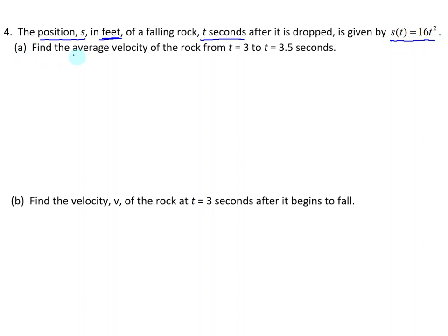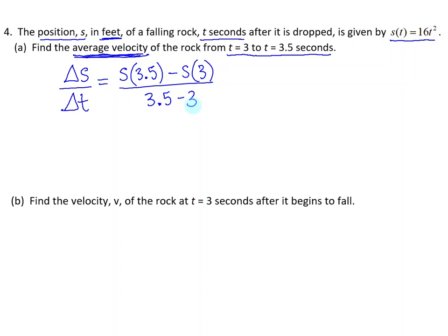Find the average velocity of the rock from t equals 3 to t equals 3.5 seconds. The average velocity is the change in position over the change in time, which is the position evaluated at 3.5 seconds minus the position evaluated at 3 seconds divided by the change in time, 3.5 minus 3 seconds.